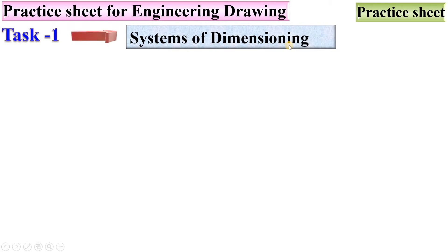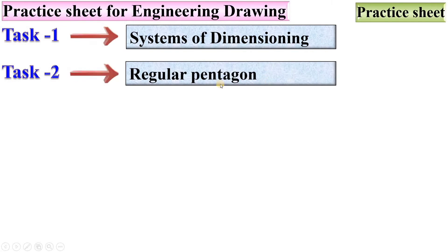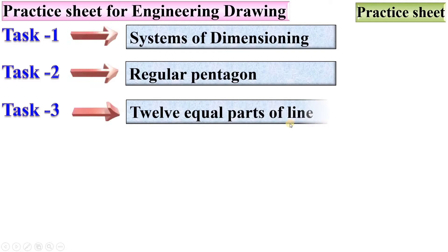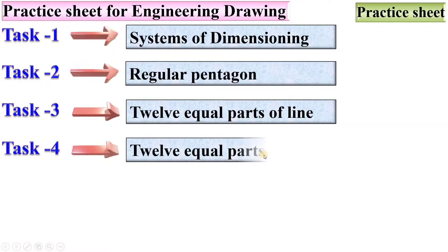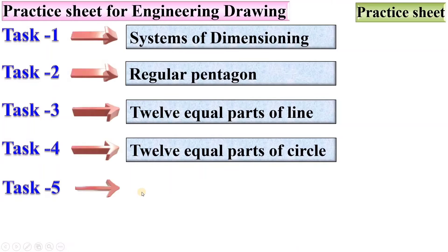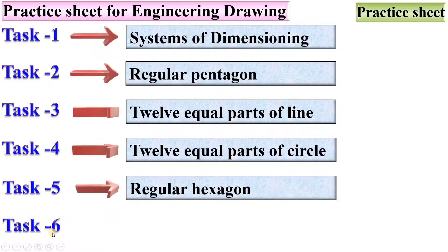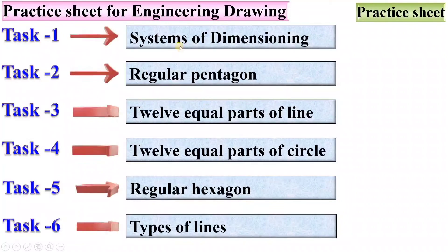Let's see first the different tasks you have to perform in the practice sheet for engineering drawing — the first sheet in the subject. Task 1 is systems of dimensioning. Task 2 is regular pentagon by the spatial shortcut method. Task 3 is 12 equal parts of a line. Next, 12 equal parts of a circle, then regular hexagon, and finally Task 6 is types of lines.